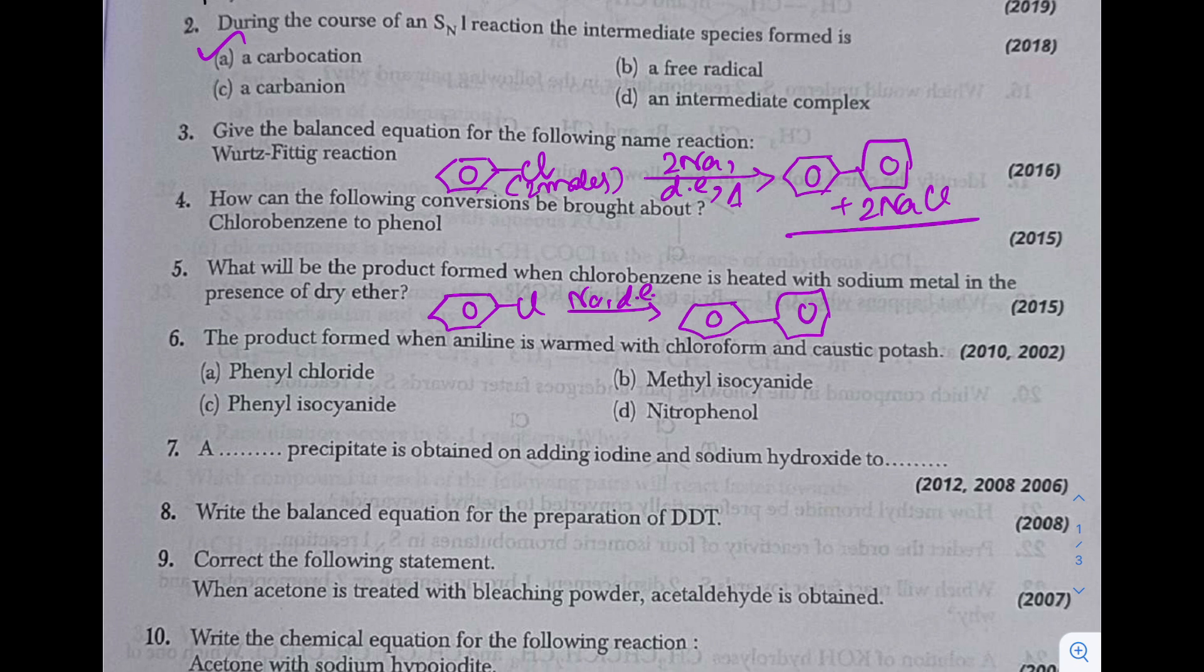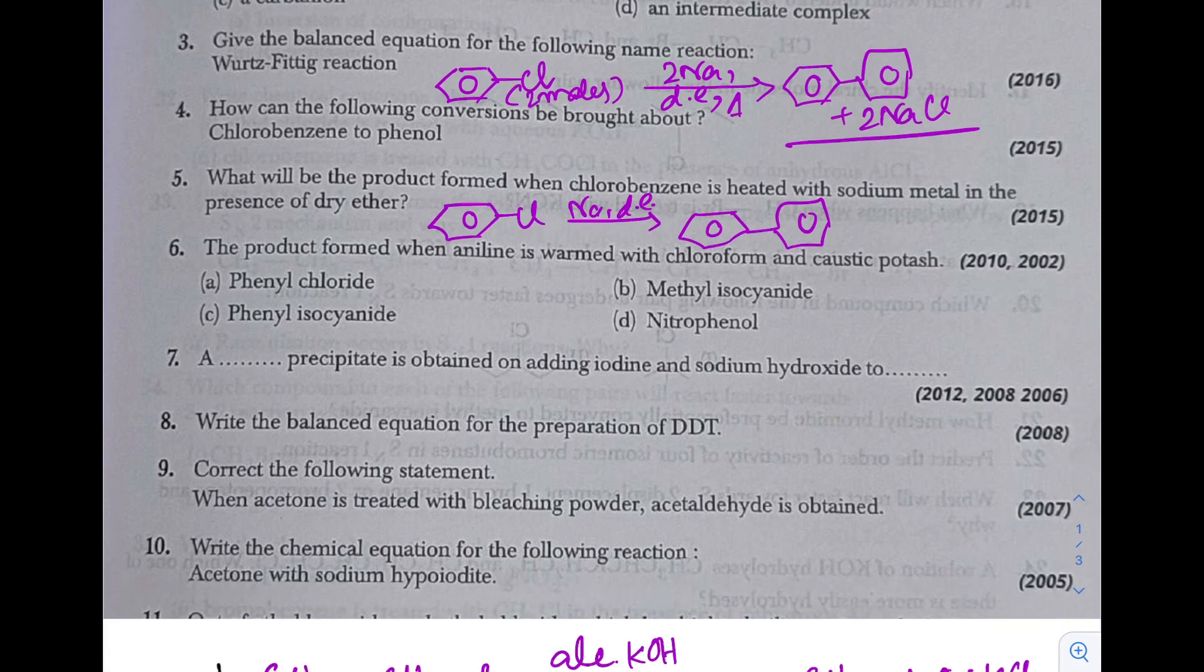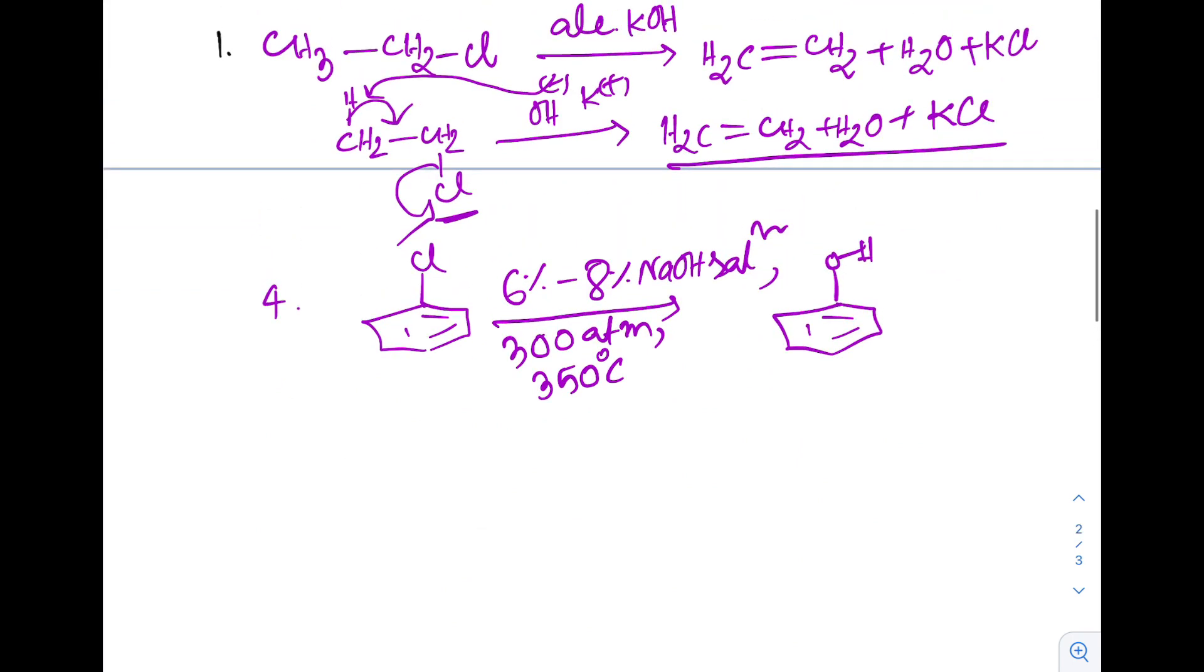Question 6: The product formed when aniline is warmed with chloroform and caustic potash. Aniline with chloroform and caustic potash - alcoholic KOH. This is nothing but carbylamine test, so it will produce the corresponding phenyl isocyanide plus KCl plus H2O. So phenyl isocyanide will be the answer, 6C.